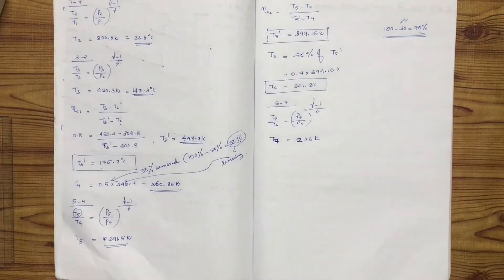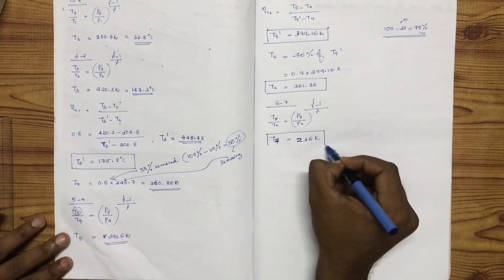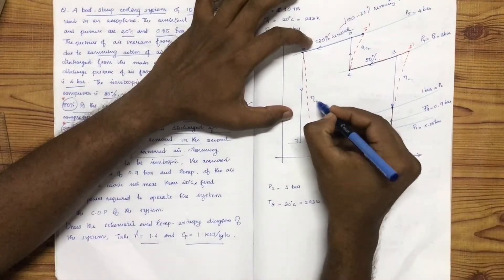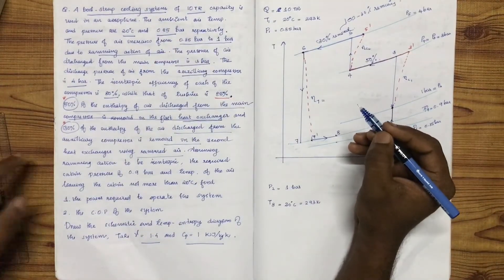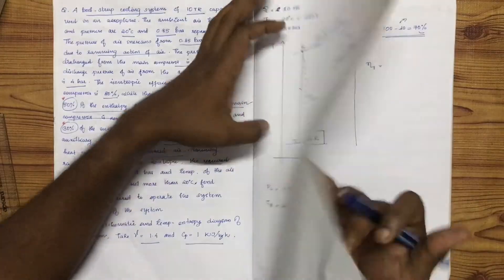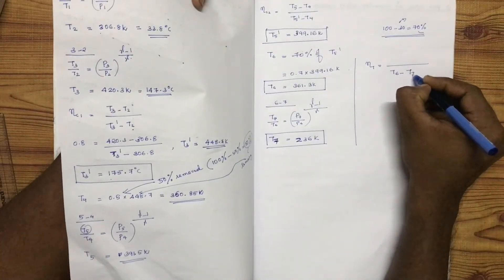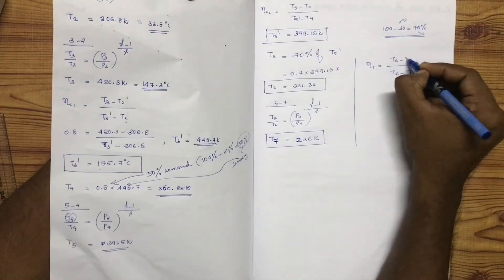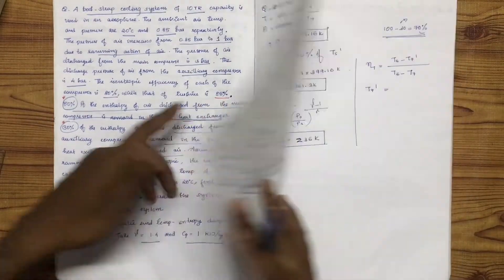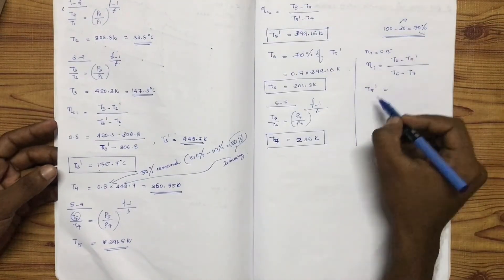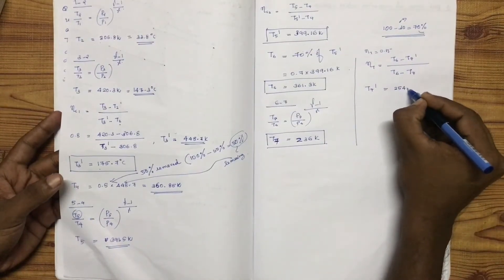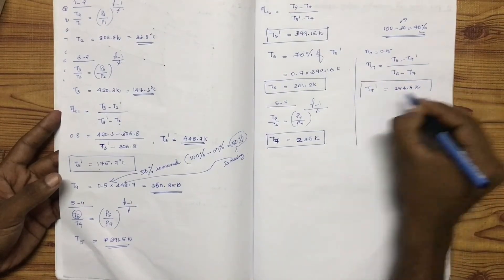T7 value is 236 Kelvin. The turbine efficiency is 85%, so 0.85 equals the actual enthalpy drop divided by the isentropic enthalpy drop. Using turbine efficiency, the numerator contains T7 and the denominator contains the isentropic T7 value to compute the actual turbine exit temperature.